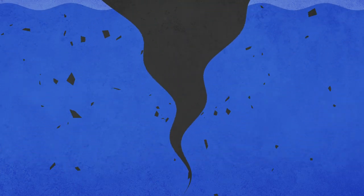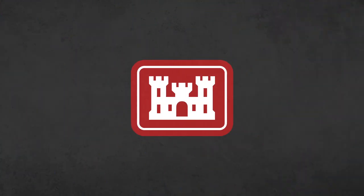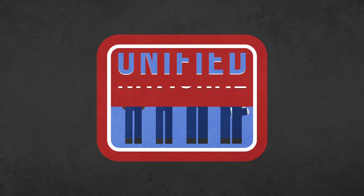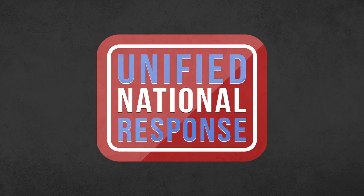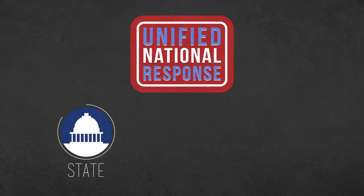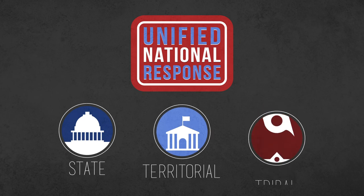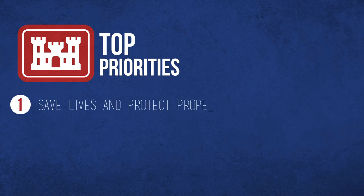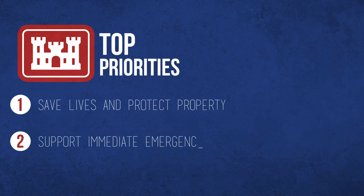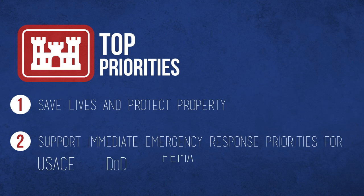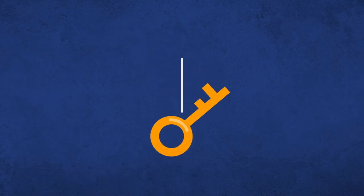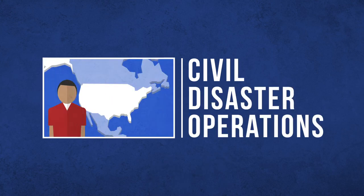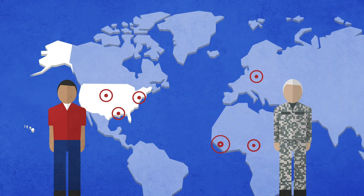In the event of a natural or man-made disaster, USACE is prepared and ready to respond as part of the federal government's unified national response to disasters and emergencies in support of state, territorial, and tribal governments. In any disaster, USACE's top priorities are to save lives and protect property and support immediate emergency response priorities for USACE, DOD, FEMA, and the federal government. The key thing to remember about civil disaster operations is that they are domestic, and domestic disaster operations differ greatly from overseas contingency military operations.